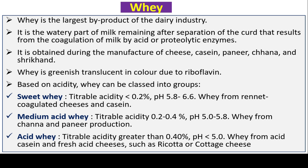Whey is the largest byproduct of the dairy industry. It is the watery part of milk remaining after separation of the curd that results from coagulation of milk by acid or proteolytic enzymes. It is produced during manufacture of cheese, casein, paneer, chana, and shrikhand. Whey is greenish and translucent in color due to riboflavin. Based on acidity, whey is classified into sweet whey (pH 5.8–6.6), from rennet-coagulated cheeses; medium acid whey (pH 5.0–5.8), from chana and paneer production; and acid whey.